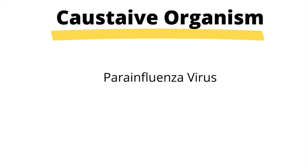Now we're going to talk about croup, which also causes stridor. Epiglottitis was caused by bacteria; however, croup is caused by parainfluenza virus, which is an RNA virus. Croup is also called laryngotracheobronchitis.